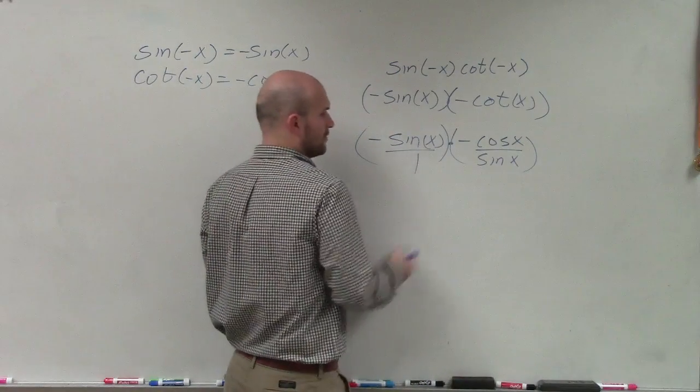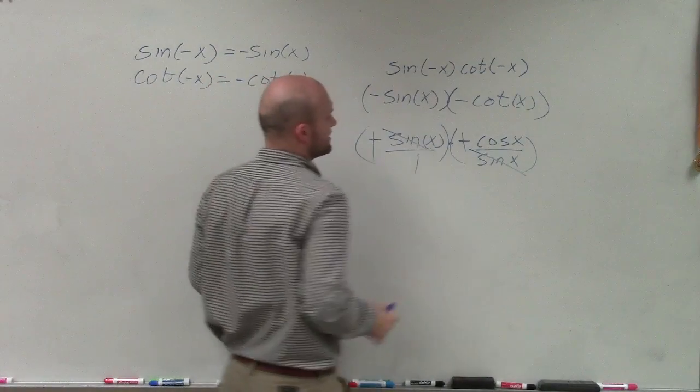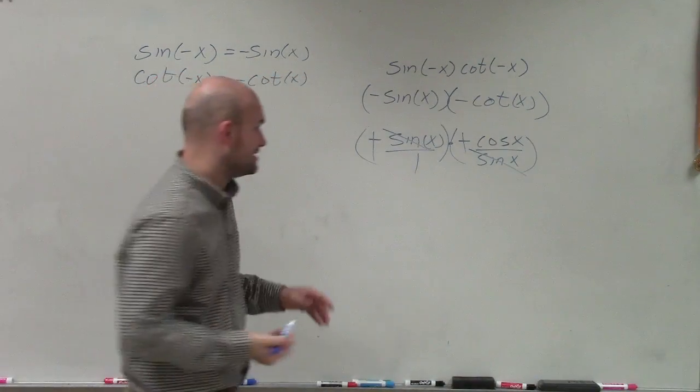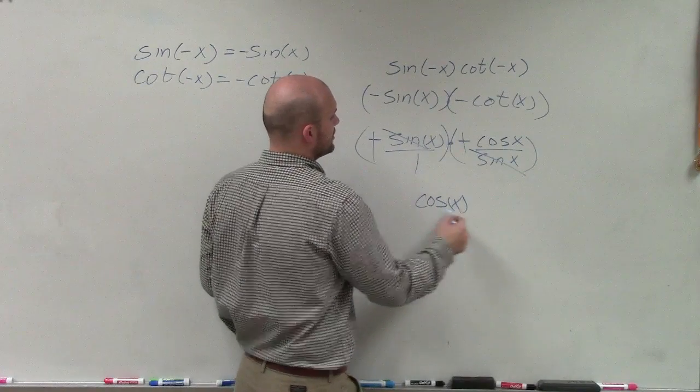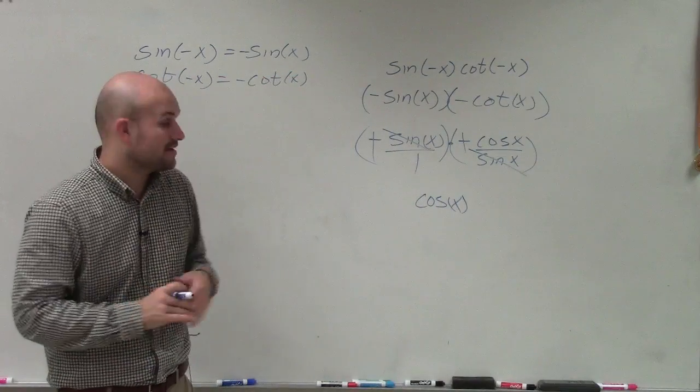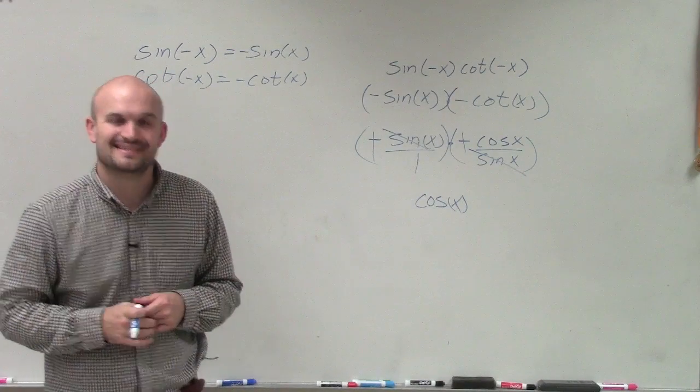And in this case, you can put that over 1. So therefore, you can say those are going to divide into 1. My two negative signs are going to multiply to make them positive. And therefore, I'm just going to be left with cosine over 1, which is just going to be cosine of x. So there you go, ladies and gentlemen. That is how you simplify using your even and odd trigonometric identities. Thanks.